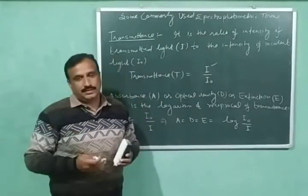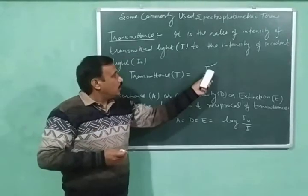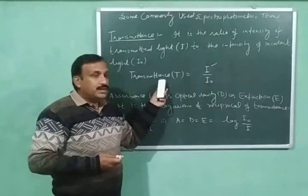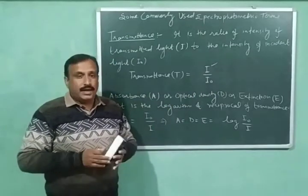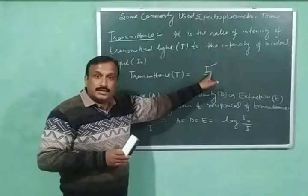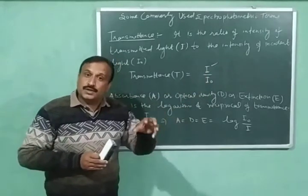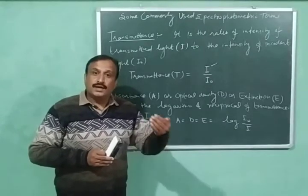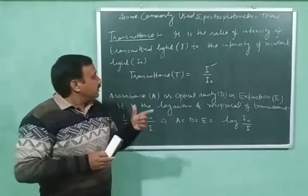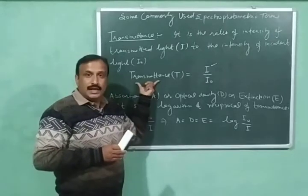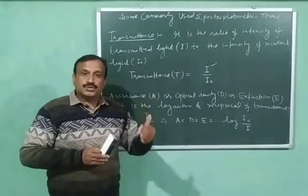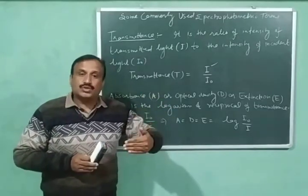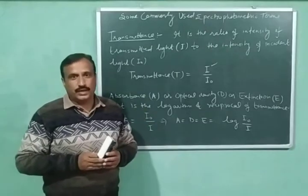If the intensity of transmitted light is more, then the transmittance is going to have a higher value. When the intensity of transmitted light is more, this means that absorption is less — the light is absorbed to a lesser extent. So when transmittance has a high value, absorption is less; and when transmittance has a low value, absorption is more.